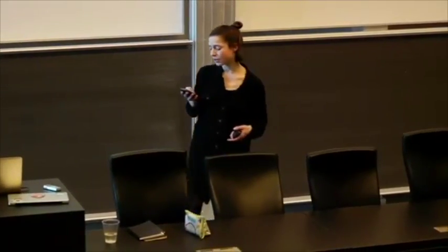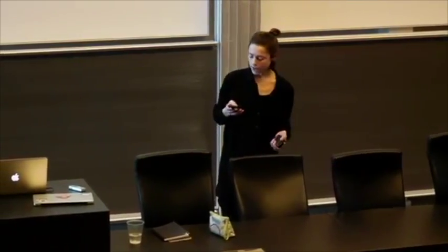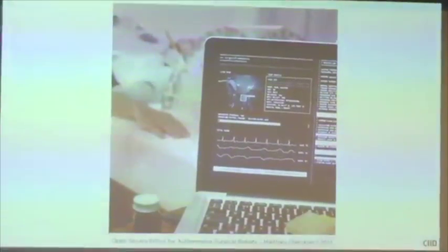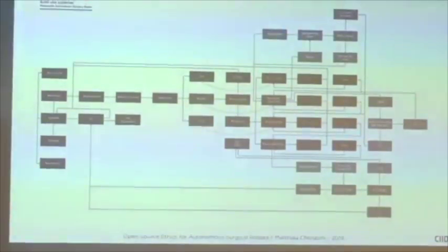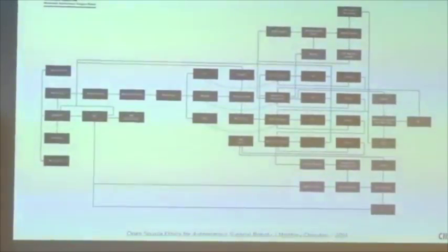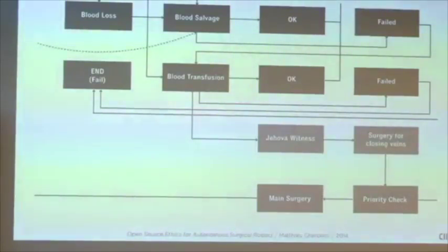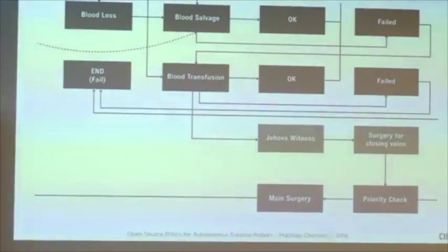Another project by Mathieu is called Open Source Ethics for Autonomous Surgical Robots. He wonders: if a company manufactured a surgical robot, the software would probably be closed — but what if it were open source? What if you could define the way an autonomous surgical robot acts based on your religious values or personal ethical map? For example, what would happen if a Jehovah's Witness were confronted with an ethical autonomous surgical robot? They refuse blood transfusion, so hackers might develop a module on top of the software that would forbid the robot to perform a blood transfusion.